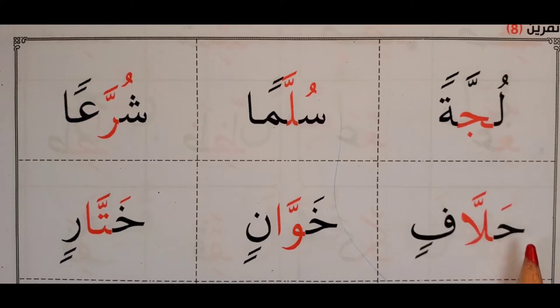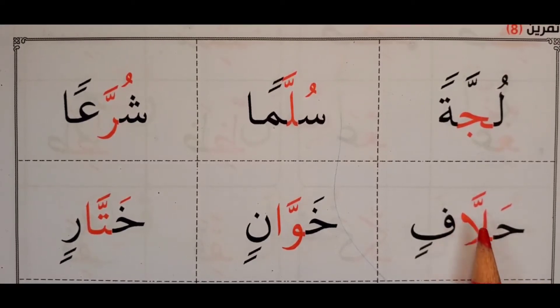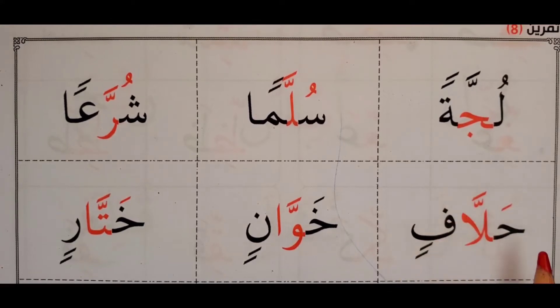Halla. Look at the laam with the shadda — but it has an alif. Laam alif. Hallaafin. Hallaafin.